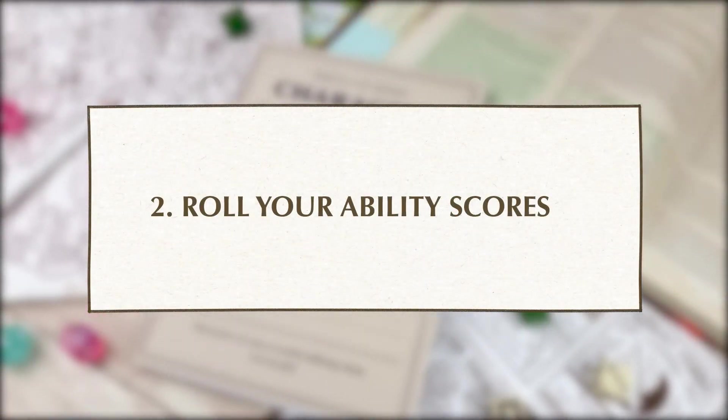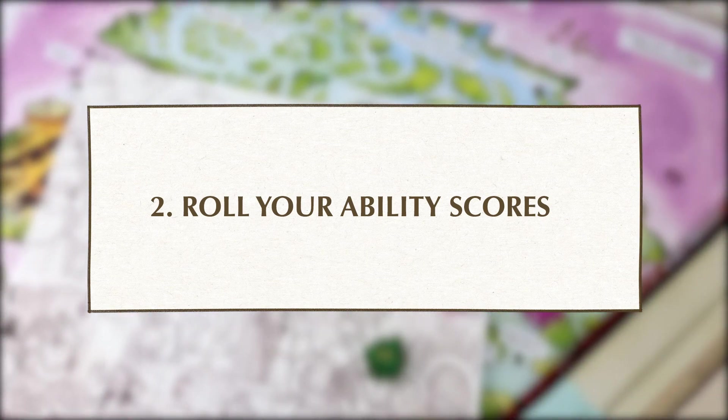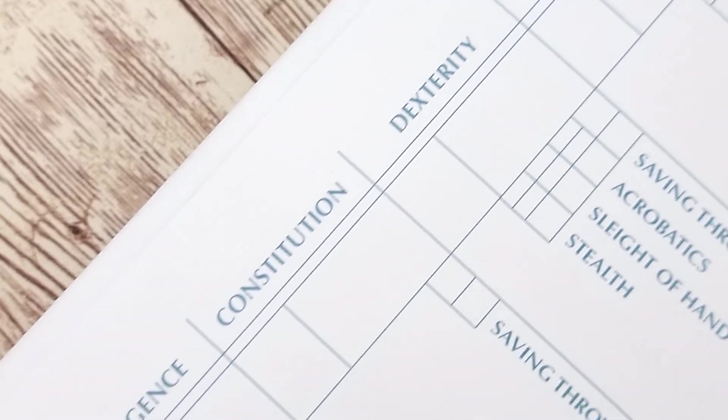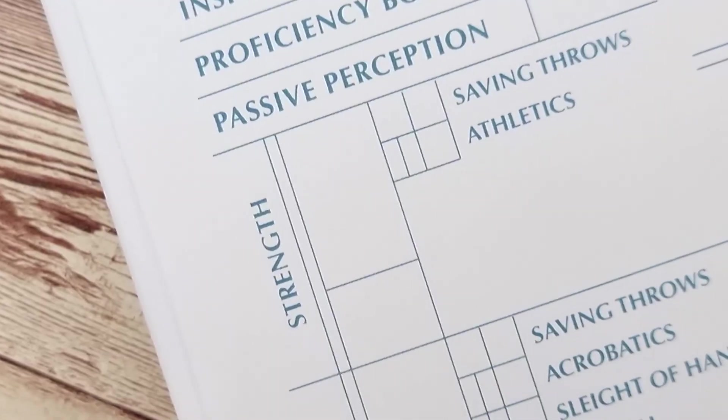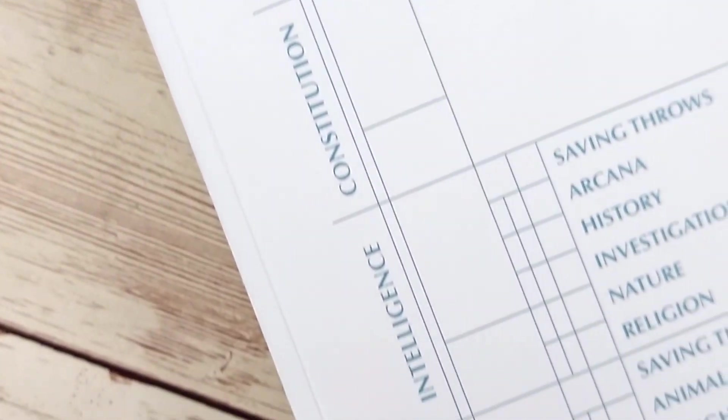To begin we're going to generate a set of six numbers. These will be your ability scores which represent how good you are at the six abilities used in the game. These abilities are strength, dexterity, constitution, intelligence, wisdom and charisma. There are different methods of generating this set of six numbers. You should ask your game master which method they prefer you to use.